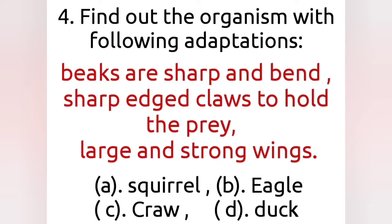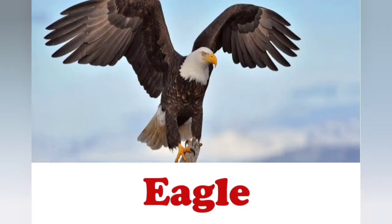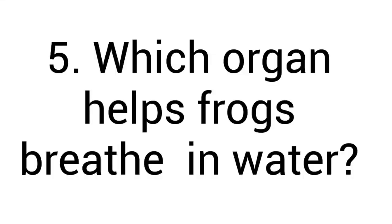Find out the organism with the following adaptations: beaks are sharp and bent, claws are sharp to hold the prey, and large and strong wings. The options are squirrel, eagle, crow, and duck. The correct answer is Option B — eagle.